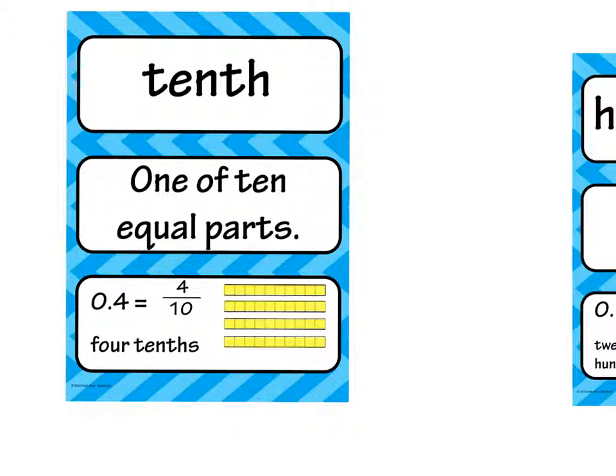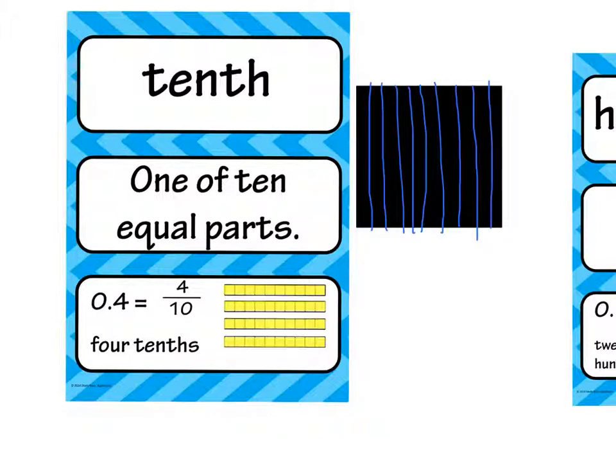Visually, we could also show it by, if we had 1 square, and we divided it into 10 columns, 1 of these rows would be considered 1 tenth, because it was 1 tenth of the square, 1 out of all 10.